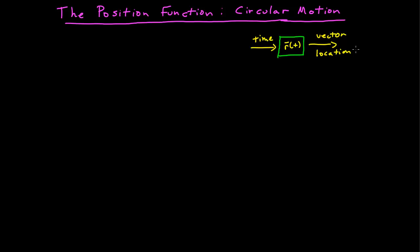I'm going to do an example of circular motion this time. Let's go to an example of a ball on a string that is being swung in a vertical circle, and we're going to say that the ball covers about 50 degrees of angle every tenth of a second.